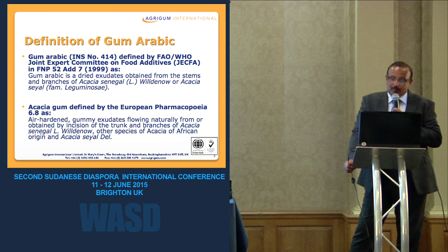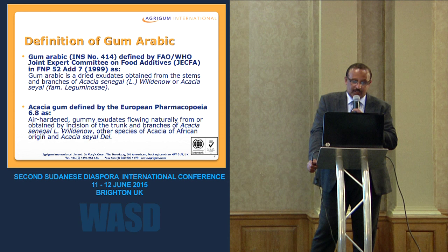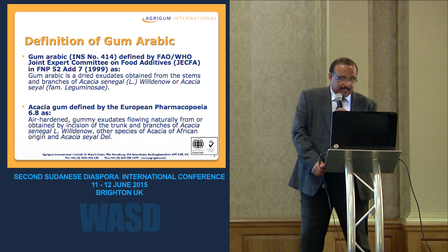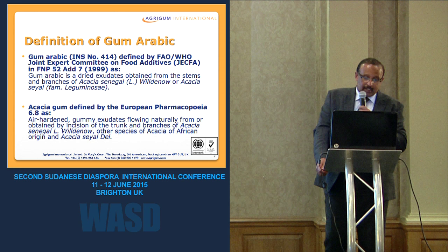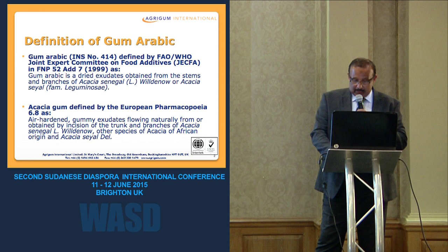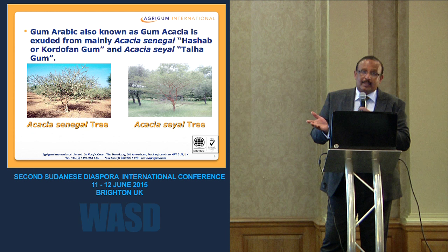Gum Arabic is defined by the JAKFA, the FAO and WHO as obtained from stems and branches of Acacia Senegal and Acacia Sayal trees. The European Pharmacopoeia has a broader definition: gum produced from Acacia Senegal and Acacia Sayal and also from other African Acacia species.